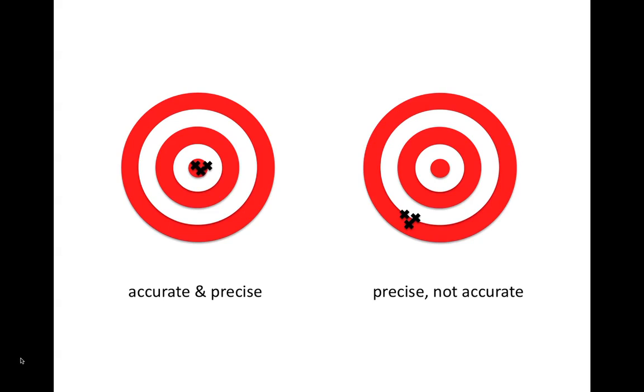Looking at the example on the right, the X's are precise because they're all close to each other, but not accurate because they missed the bullseye of the target.